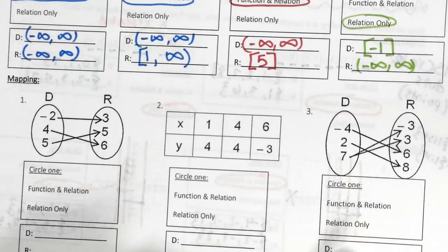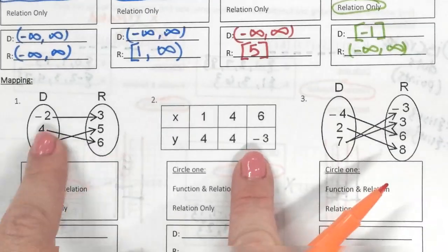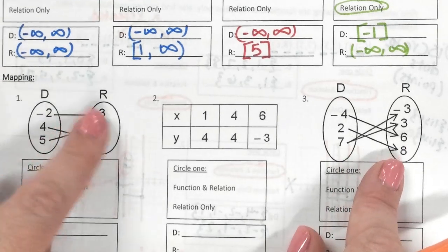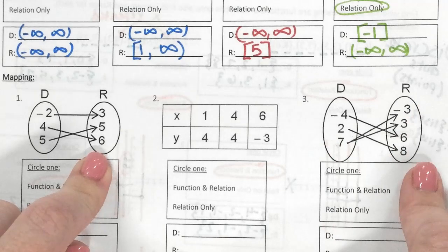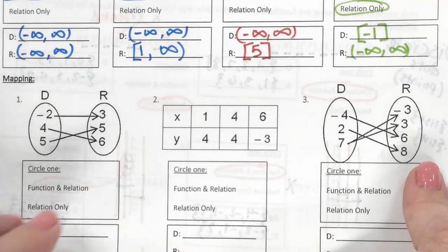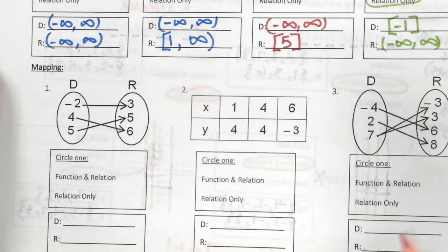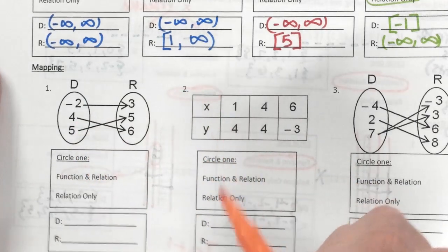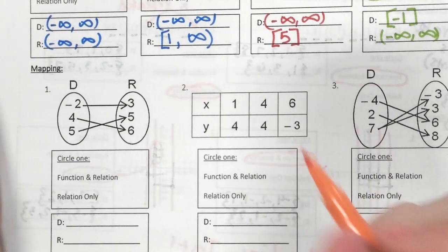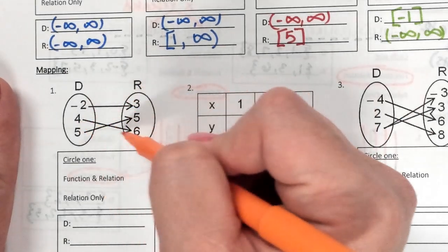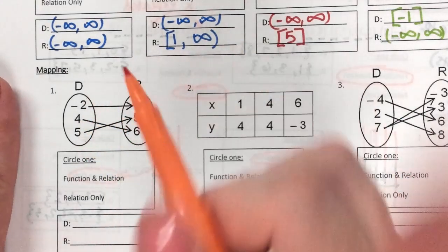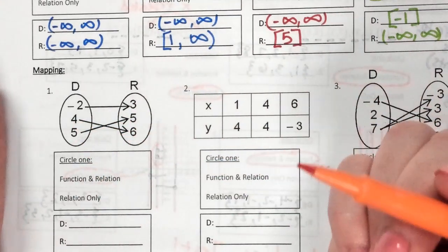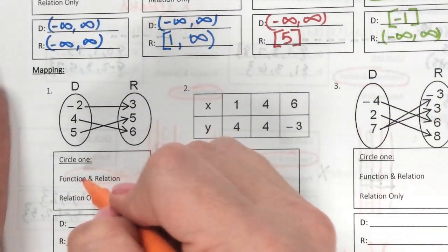This is called mapping — it's either a table or it has these circle diagrams. We like these because X and Y are already in order, making domain and range easy. Domain is a list: negative 2, comma 4, comma 5. They all only have one arrow, meaning one output each: negative 2 comma 3, 4 comma 6, 5 comma 5. Did X ever repeat? No — so it's a function.